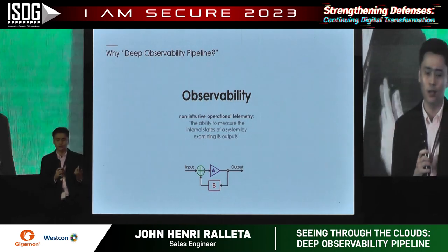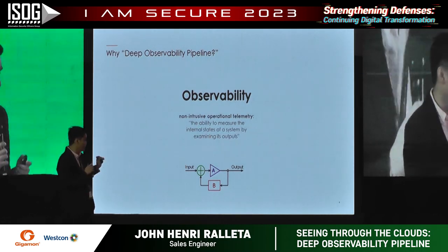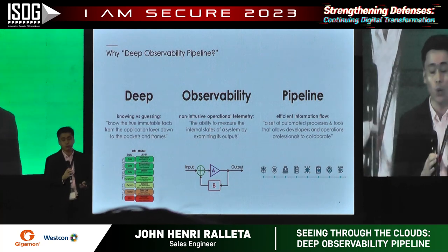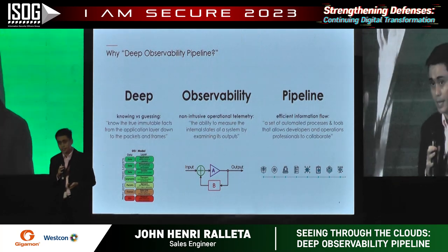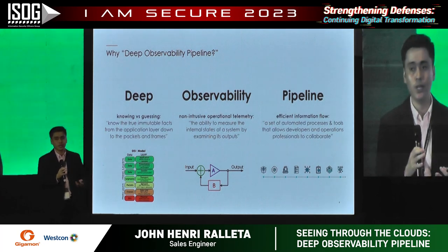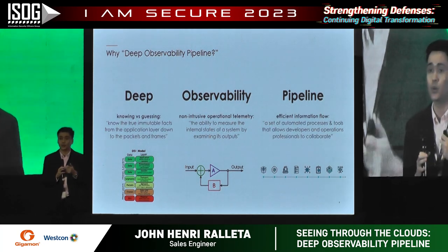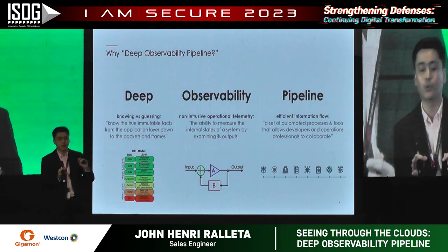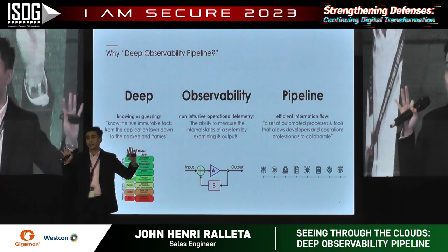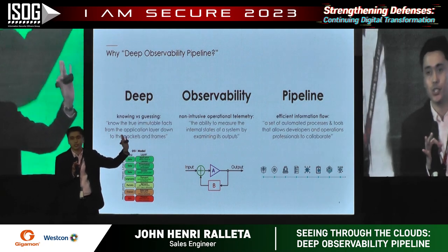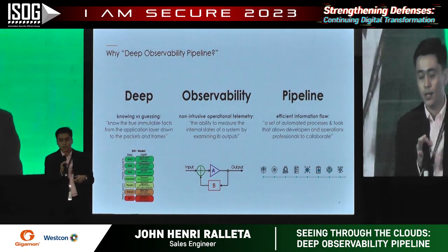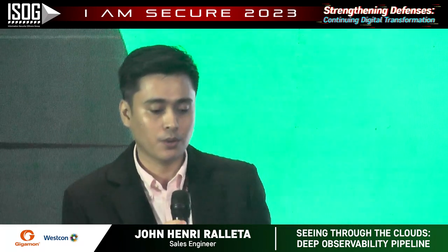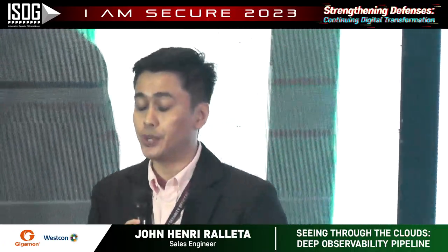So why deep observability pipeline? It's about the difference between knowing versus guessing — we can harness powerful insights through the network, get that data, and deliver it to our observability tools. Pipeline means we have like a bridge connecting two worlds: your data center, your workloads, your applications — traversing to the observability tools that you have. What are the trends in cloud security now? We have different groups — DevOps, CloudOps, NetOps — and they have different tools and telemetries that cannot collaborate with one another.